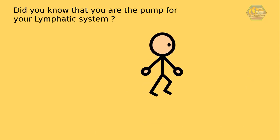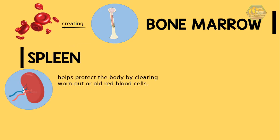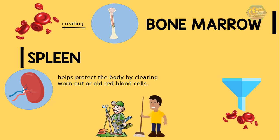The bone marrow is responsible for creating new cells. Now, we've heard things about the spleen, but what is it really? Basically, the spleen helps protect the body by clearing worn out or old red blood cells. In other words, the spleen acts as a filter — it weeds out old and damaged cells, then helps control the amount of blood and blood cells that flow through your body. They're like the janitors and gardeners in our school.